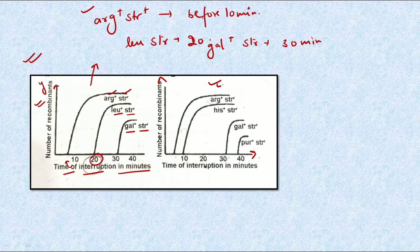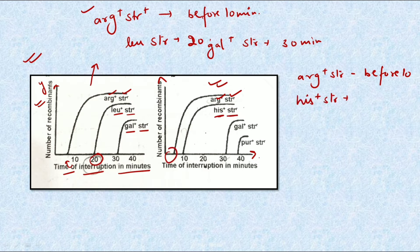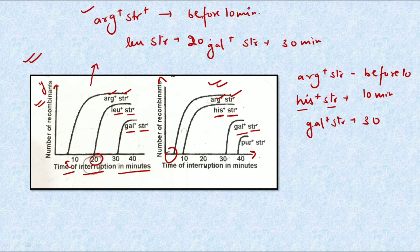From graph two, histidine and str occur at 10 minutes. Gal+ and str occur at 30 minutes. And finally, pur and str occur at 40 minutes.